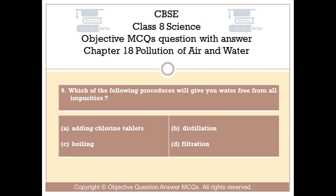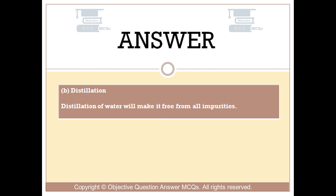Question number 9. Which of the following procedures will give you water free from all impurities? Option A: Adding chlorine tablets. Option B: Distillation. Option C: Boiling. Option D: Filtration. The right answer is Option B — Distillation. Distillation of water will make it free from all impurities.